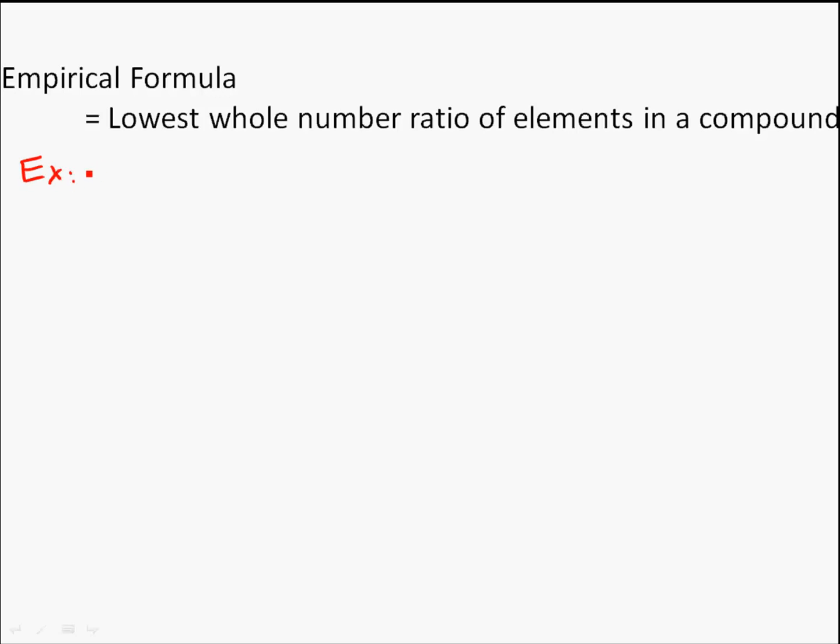We're going to talk about a compound that is 25.9% nitrogen and 74.1% oxygen. We're going to try to figure out what the empirical formula is going to be.